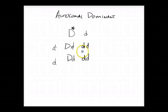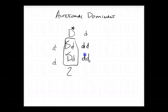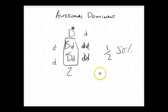Because autosomal dominance means only one gene has to be affected or defected in order to pass on the disease, we see that this person and this person will both get the disease. When we do the math, we have two who do and two who don't, so those people won't be affected. That means we have a 50% chance of passing on an autosomal dominant disease.